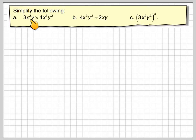Right, what we're going to do now is use the rules of indices to simplify the following. We've got 3x squared y times 4x cubed times y squared. b, 4x cubed y squared divided by 2xy. And c, 3x squared y cubed or cubed.